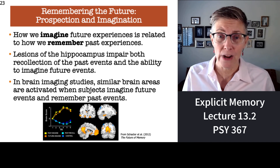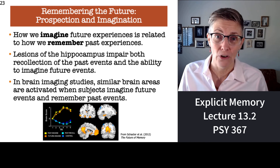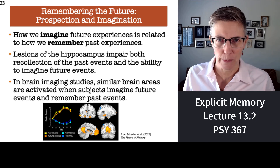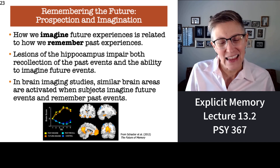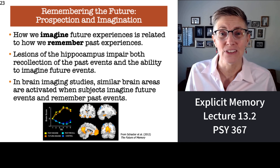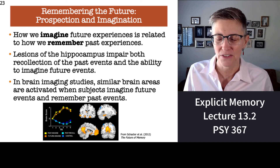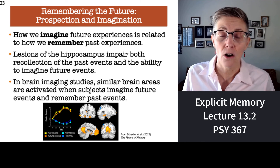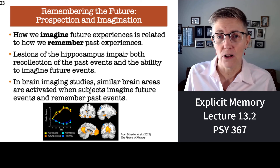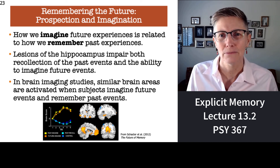Circling back to the time travel aspect of episodic memory: when you look at the brain areas involved in remembering past experiences versus imagining future events, similar brain areas are activated in both conditions. Thinking about your personal future and remembering your personal past involve a lot of the same processes. We know that lesions to the hippocampus disrupt both recalling old episodes of your life and imagining future episodes. So there's real overlap there, which is quite fascinating. Come back and we'll talk about all of the memories you have that you're not consciously aware of.